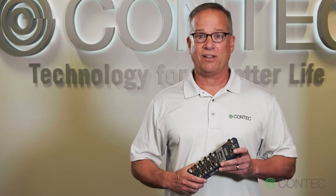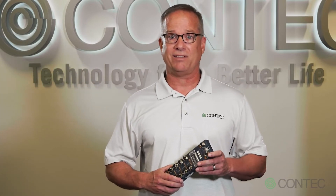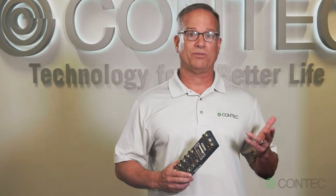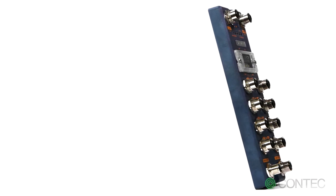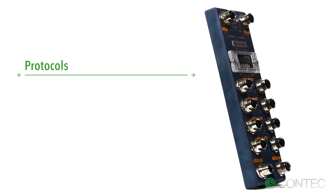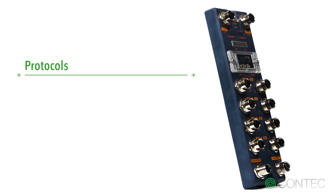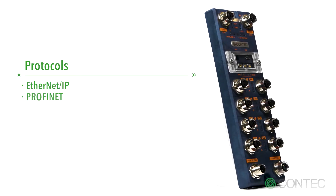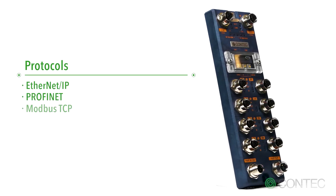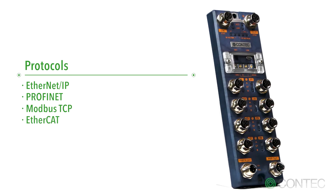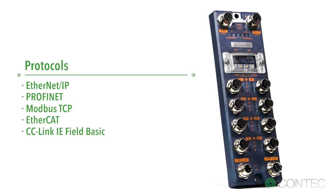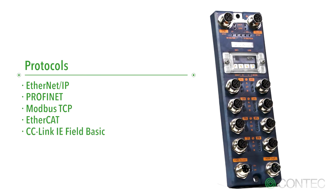However, while this technology may support multiple networks, in many cases the Master Module does not. Contact's IO-Link Master is unique in that it supports the widest possible range of field networks including Ethernet IP, PROFINET, MODBUS TCP, EtherCAT, and CC-Link IE Field BASIC, all from the same device.